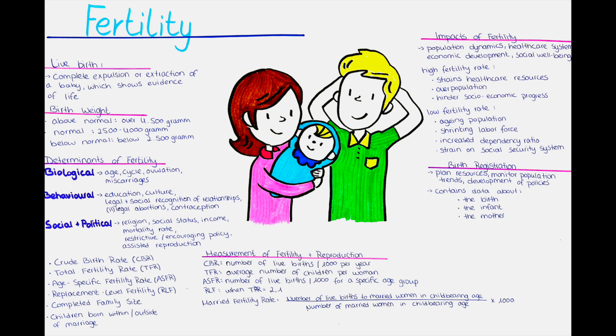In the assessment of fertility rates, we often talk about the number of live births. A live birth is defined as the complete expulsion or extraction of a product of human conception from the mother, irrespective of the duration of pregnancy, which after such expulsion or extraction breathes or shows any other evidence of life, such as a beating heart, pulsation of the umbilical cord, or definitive movement of voluntary muscles, whether or not the umbilical cord has been cut or the placenta is attached.